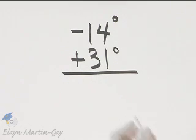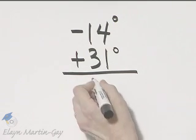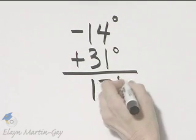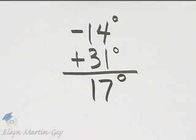And if we do so, we'll find this sum is a positive 17, or 17 degrees. So the temperature at noon was 17 degrees.